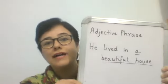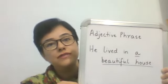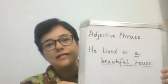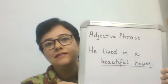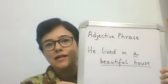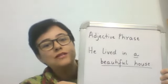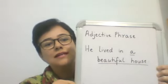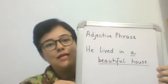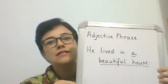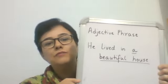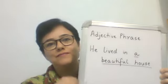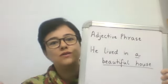The third type is an adjective phrase — called so because it has an adjective in it. An adjective is a describing word. In the sentence 'He lived in a beautiful house,' the phrase is 'a beautiful house.' It is an adjective phrase because it contains the adjective 'beautiful,' which is a describing word that describes the noun 'house.'